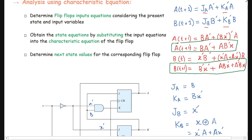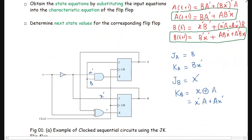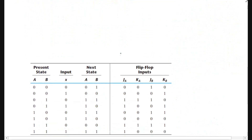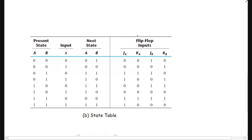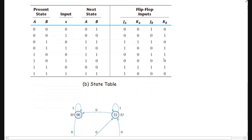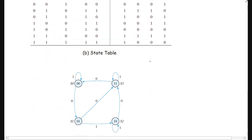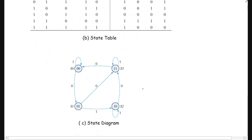Using these equations, you can substitute the present state values and input values to find the next state of the circuit. The corresponding state table and state diagram for this circuit have already been discussed in the last lecture. Thank you.